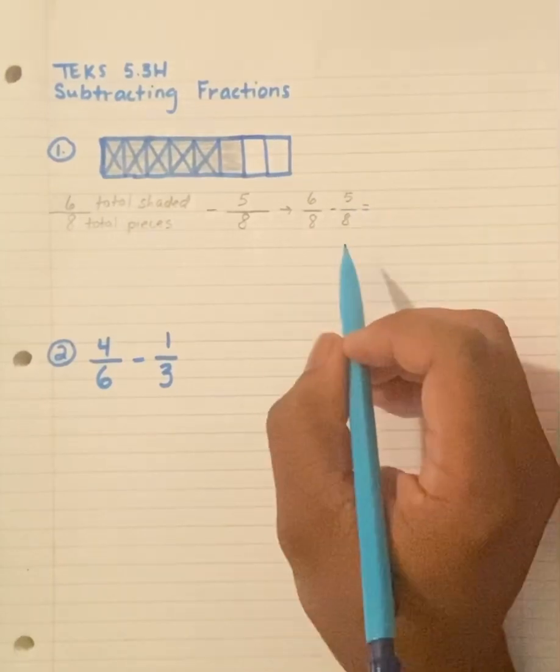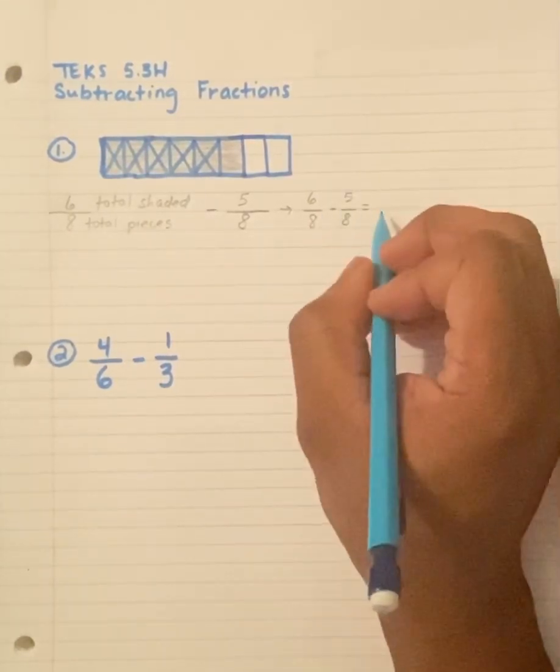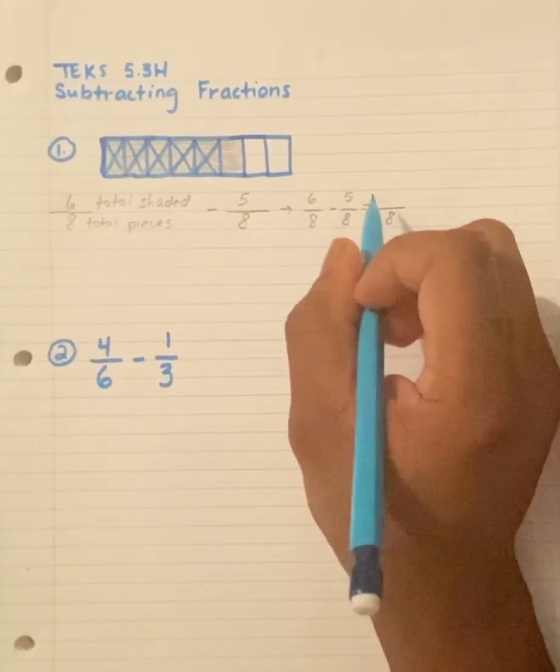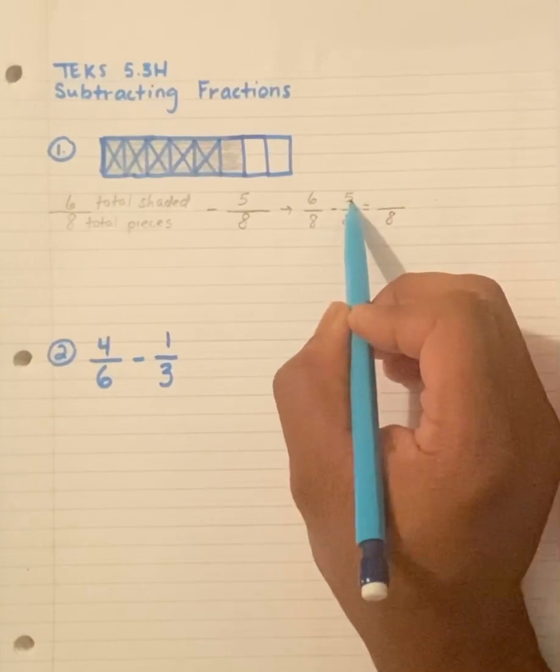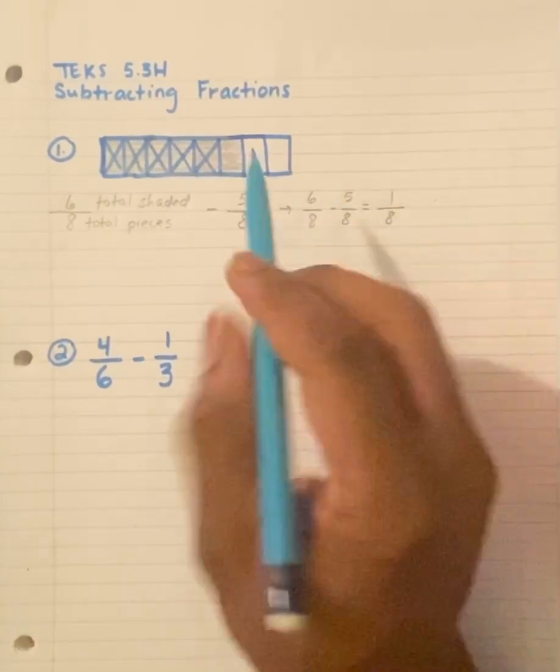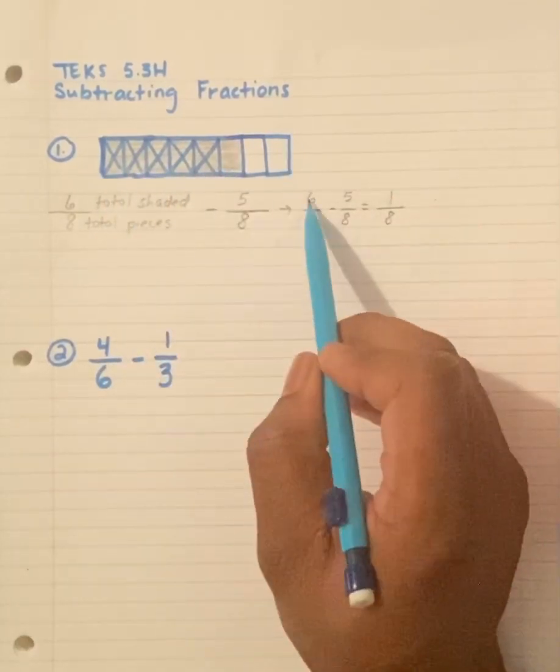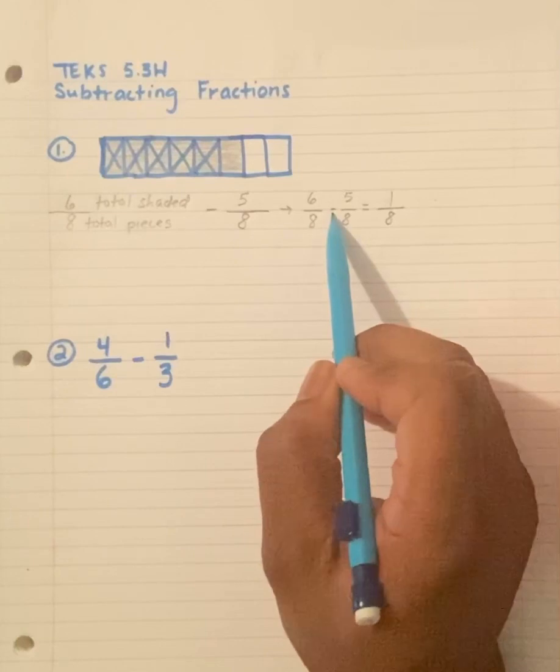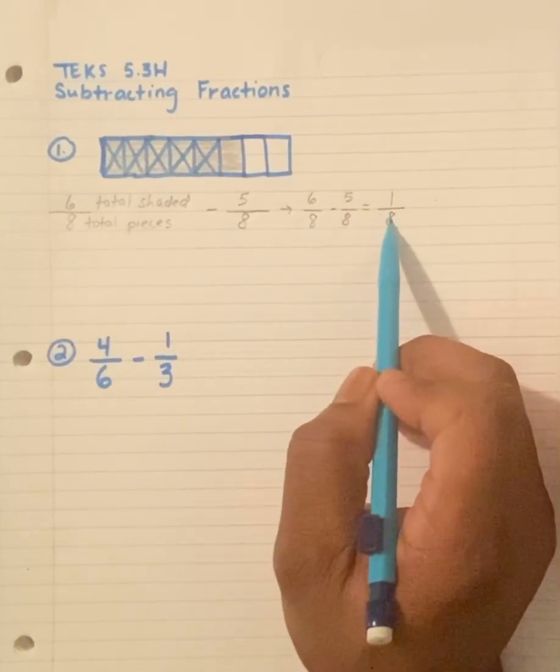And the answer is, we know we do not subtract denominators, so the denominator stays the same. We only subtract the numerators. 6 minus 5 equals 1. So this picture represents 6 over 8 minus 5 over 8, and when you solve it, it equals 1 over 8.